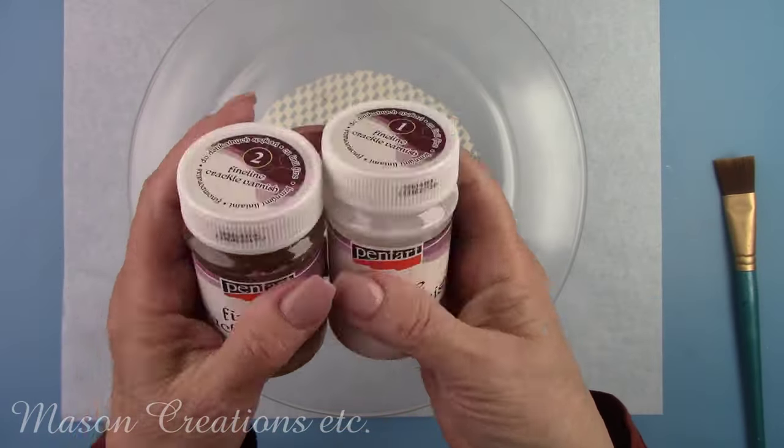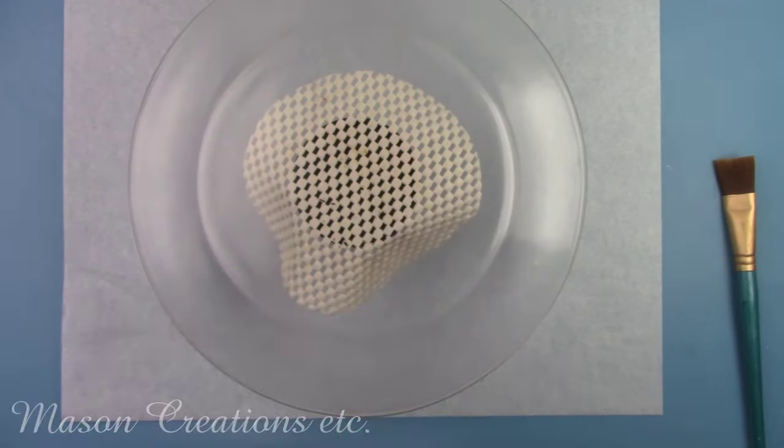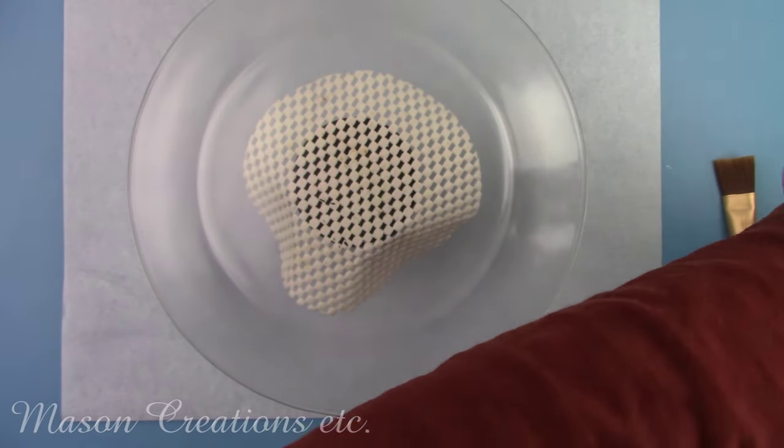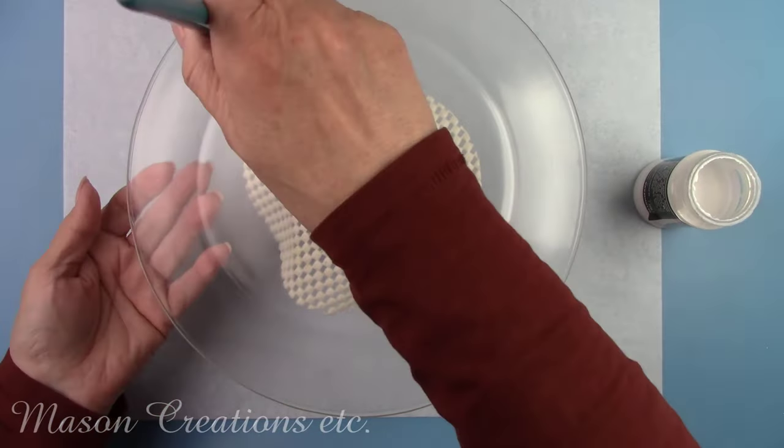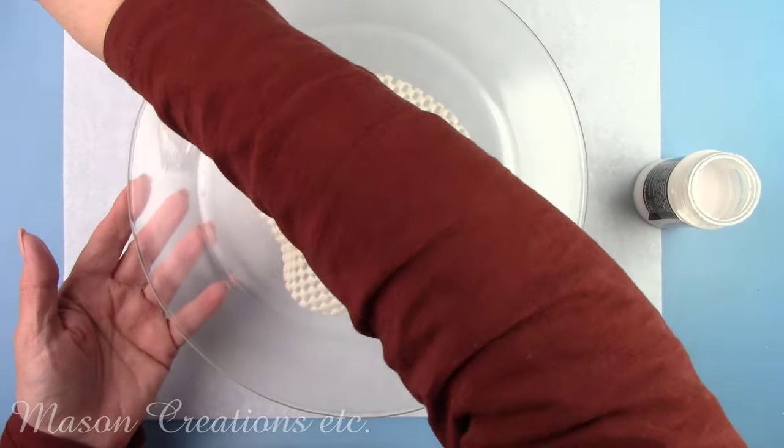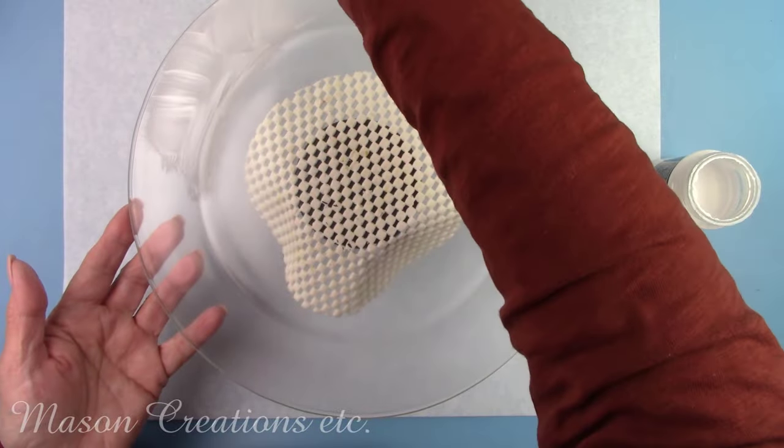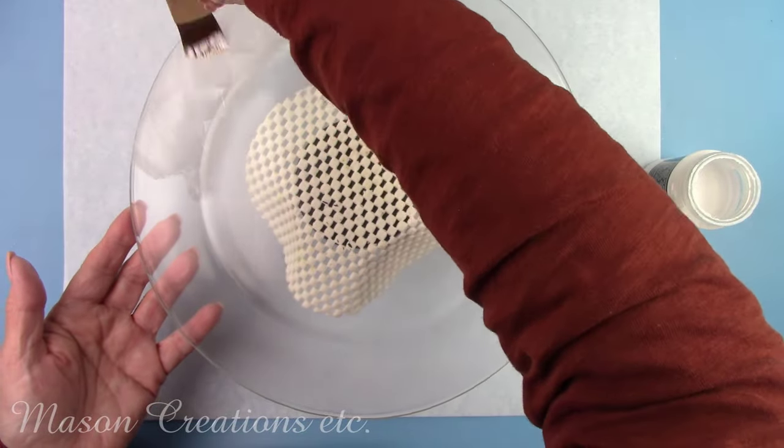I'm going to give this plate a vintage cracked porcelain appearance. I'm using Pentart's Fine Line Crackle Varnish. It's a two part system and I'm brushing on component number one. I'll let that dry for about an hour or so until it's clear.